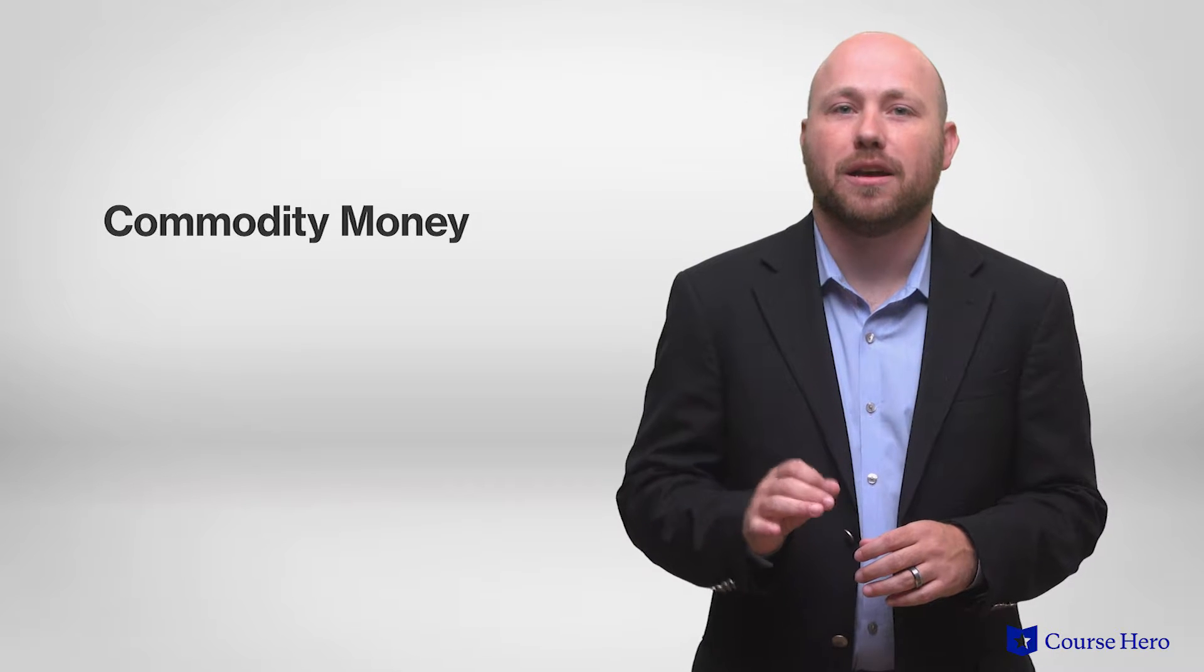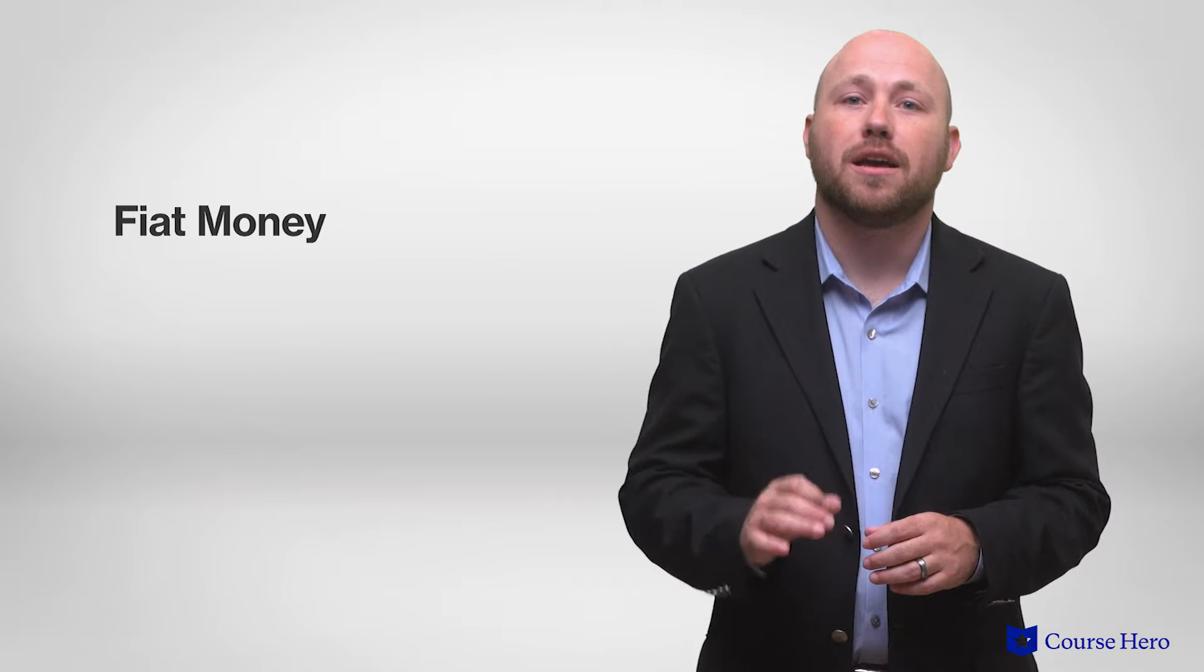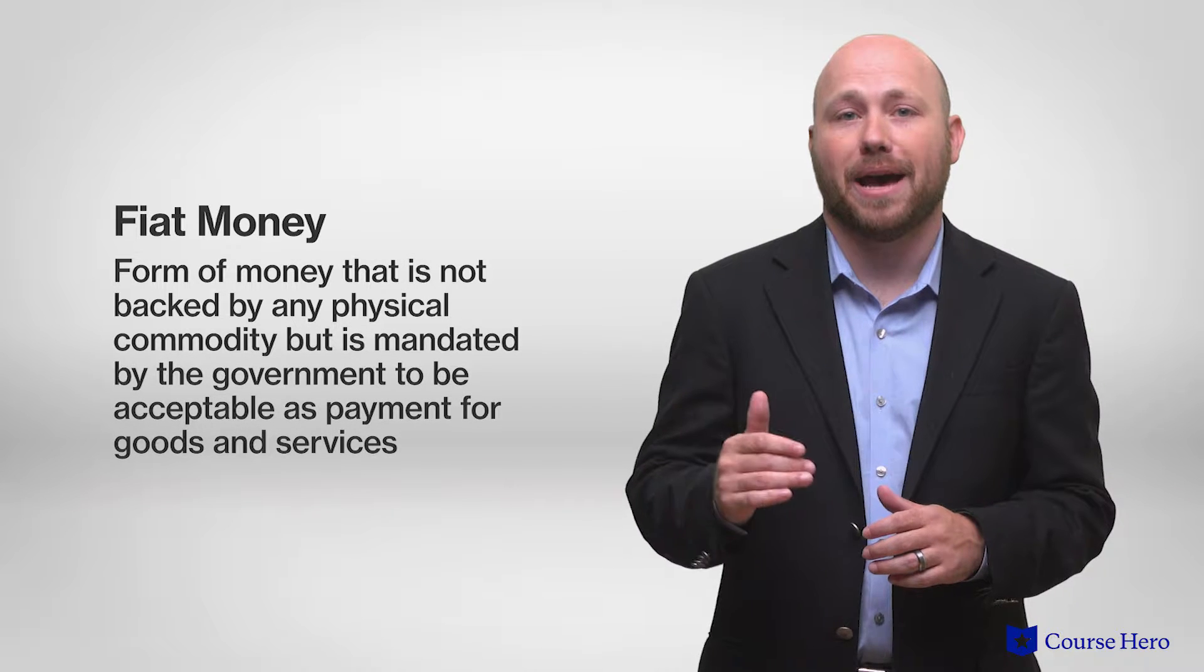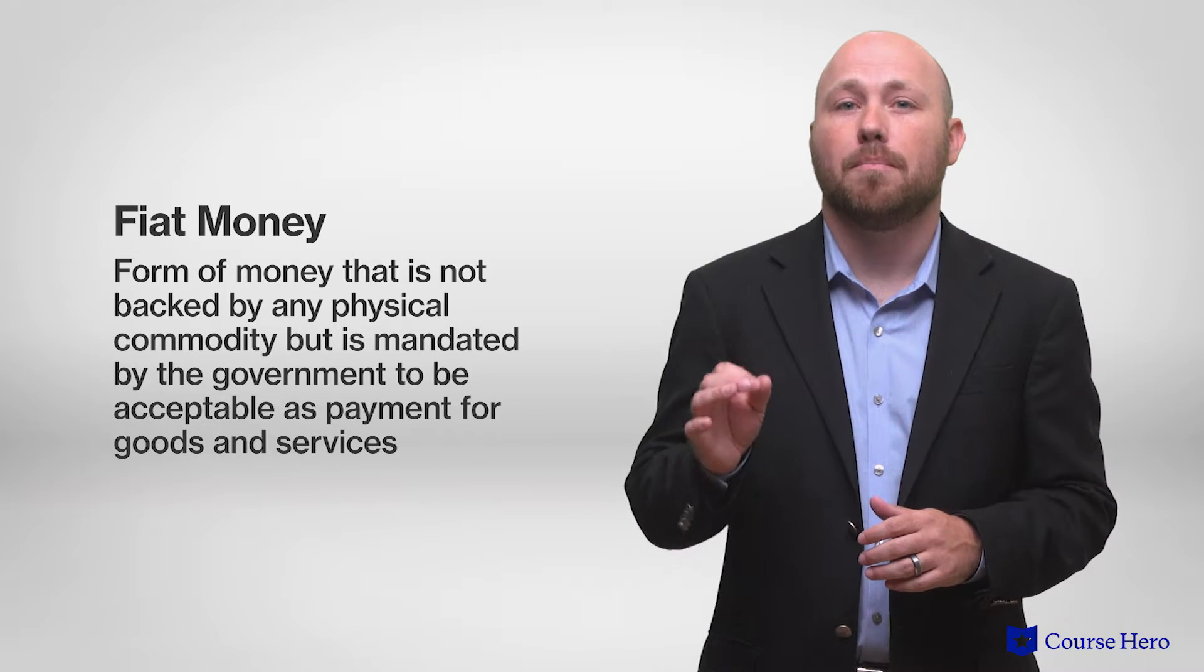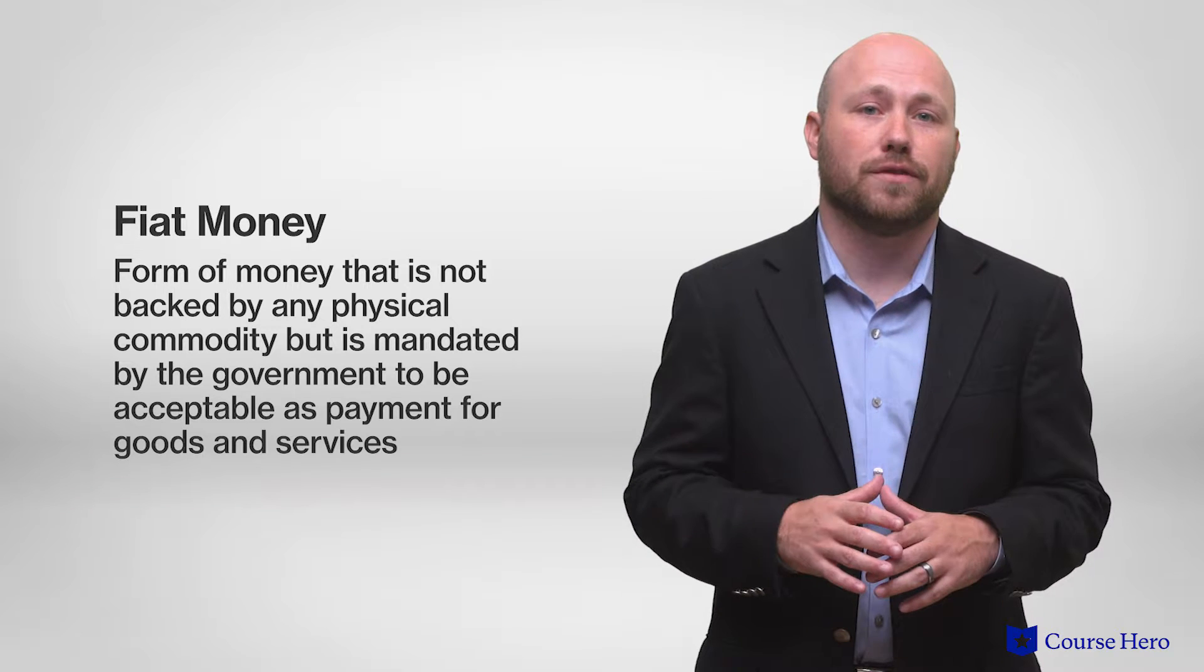In the past, money in circulation was commodity money, which is a form of money that has value in itself, such as gold or silver coins. However, today, the money in circulation in the United States is fiat money, which is a form of money that is not backed by any physical commodity, but is mandated by the government to be accepted as payment for goods and services.